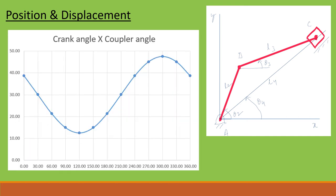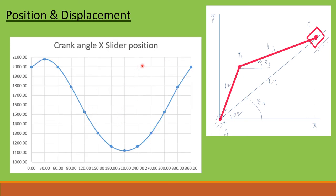In the first graph, we have plotted crank angle versus coupler angle, with crank angle on the horizontal axis from 0 to 360 and coupler angle on the vertical axis. At 120 degrees of crank angle, coupler angle is minimum, and at 300 degrees of crank angle, coupler angle is maximum. In the second graph, crank angle is plotted versus slider position. At 30 degrees, slider position is maximum, meaning the crank is falling on the fixed link line where theta 2 equals theta 4. At 210 degrees, slider position is minimum, which happens when crank angle equals theta 4 plus 180 degrees.